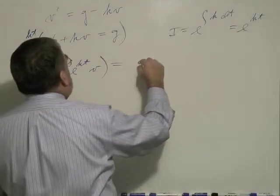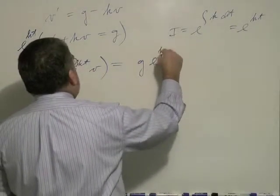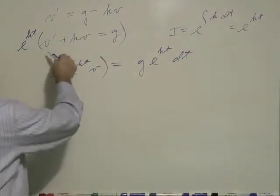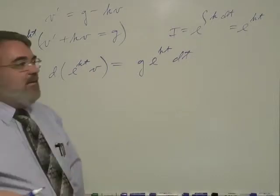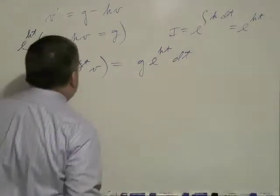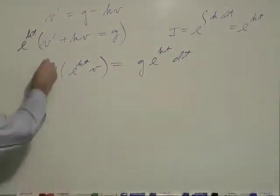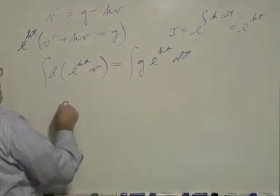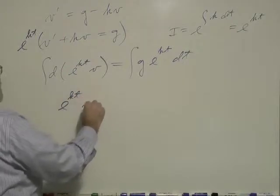It's going to be the differential of my integrating factor times my variable. The right side is going to be g times e to the kt. And in the course of separating out dv over dt, we have dt on the right side.